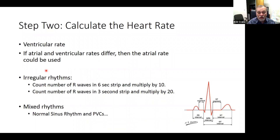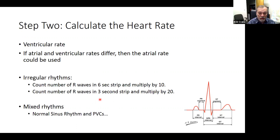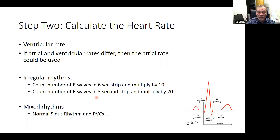If it is an irregular rhythm, we use a different method: count the number of R waves in a six-second strip and multiply by 10. Or you can count the R waves in a three-second strip and multiply by 20 — you'll get the same result. Some places will have you look at your overall rhythm; it might be a normal sinus rhythm with a few PVCs thrown in, so you count the normal rhythm and then note those separately, calling it a normal sinus rhythm with PVCs.